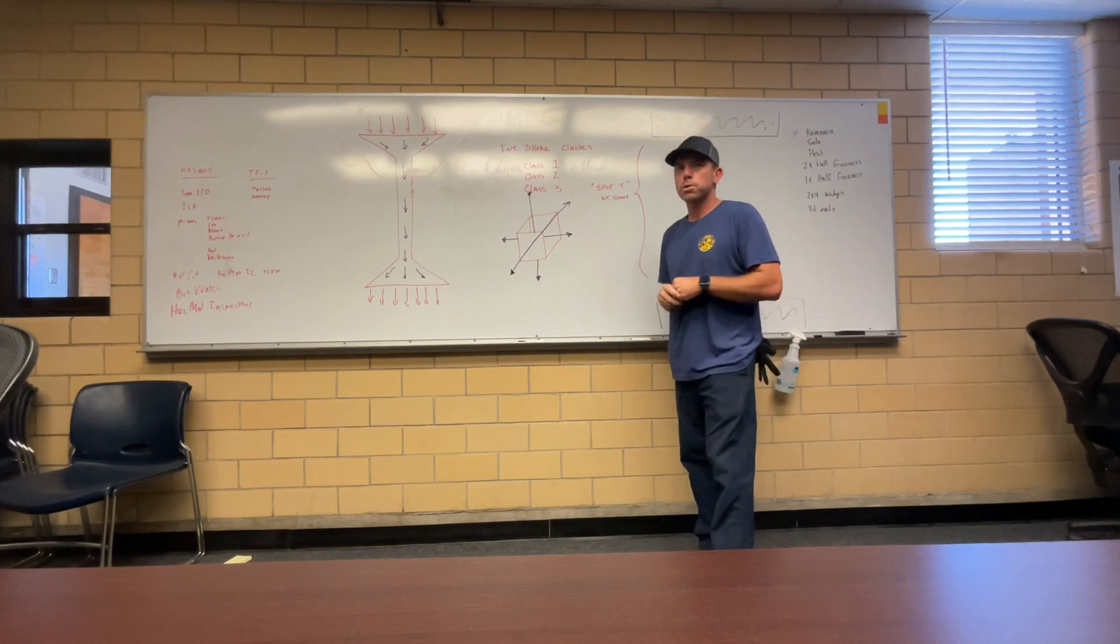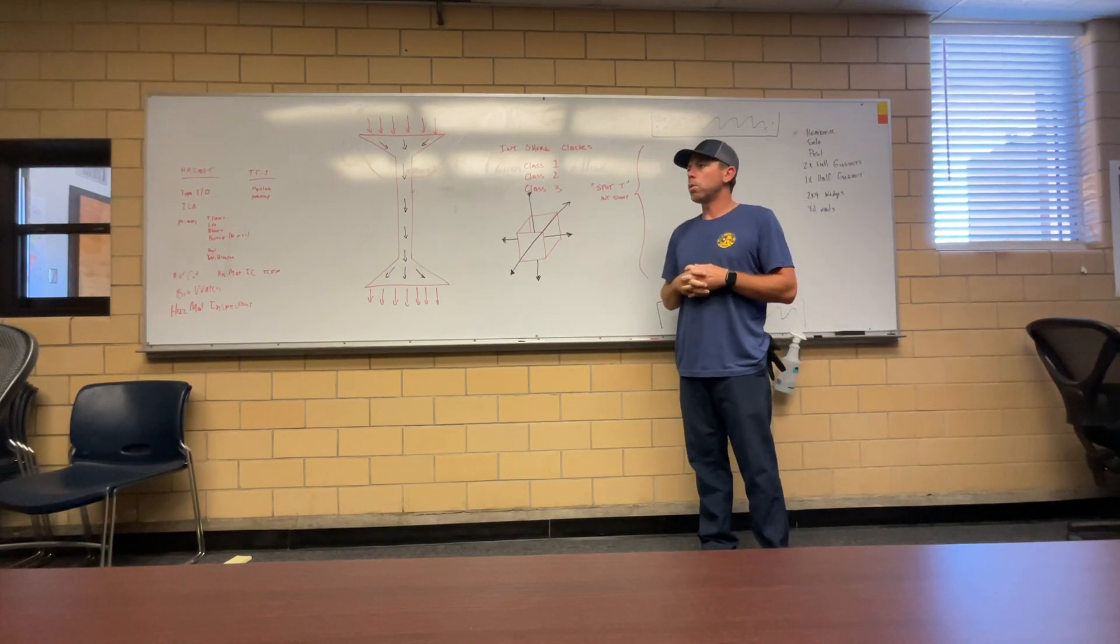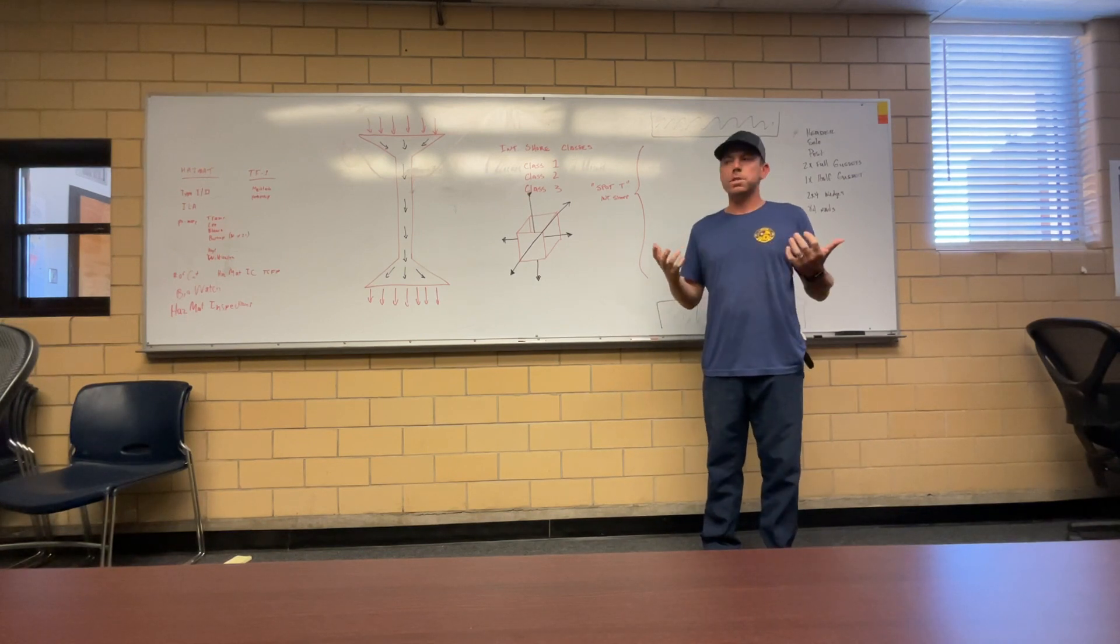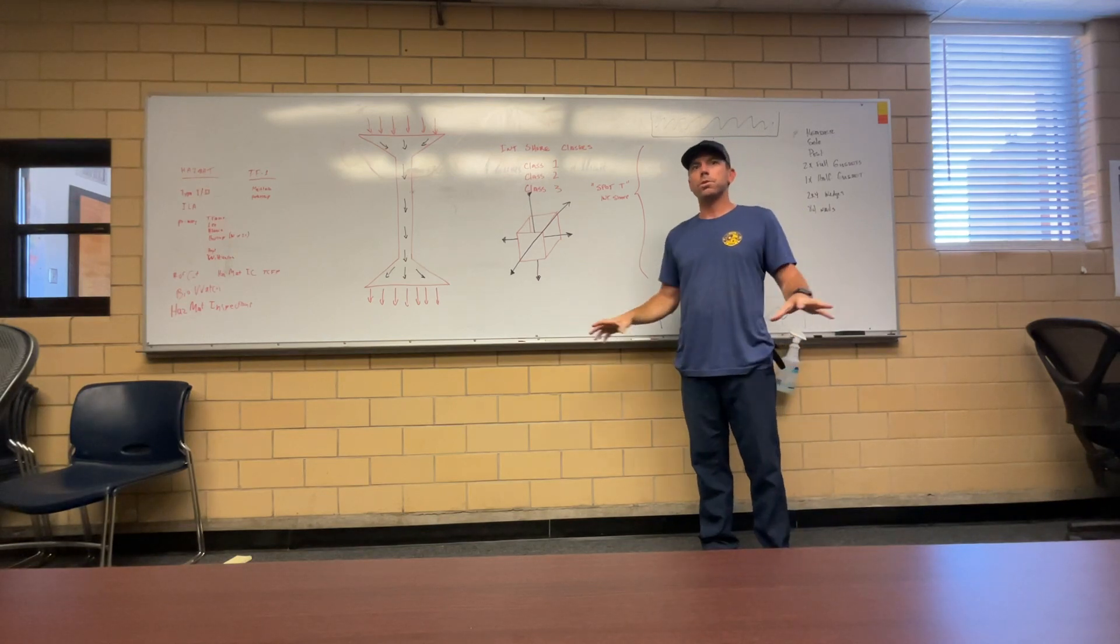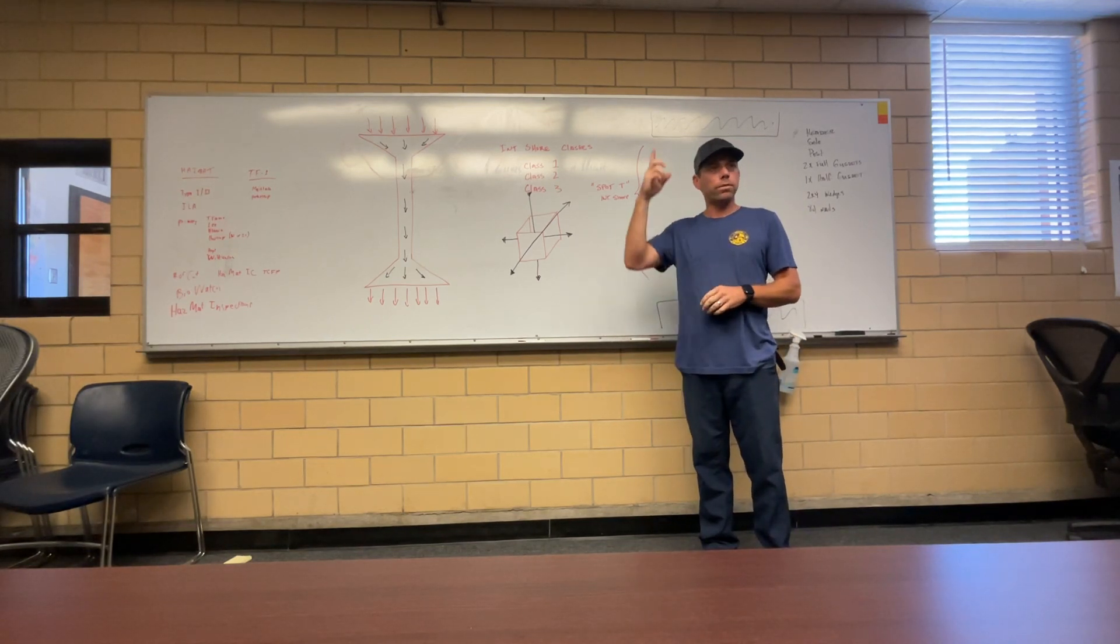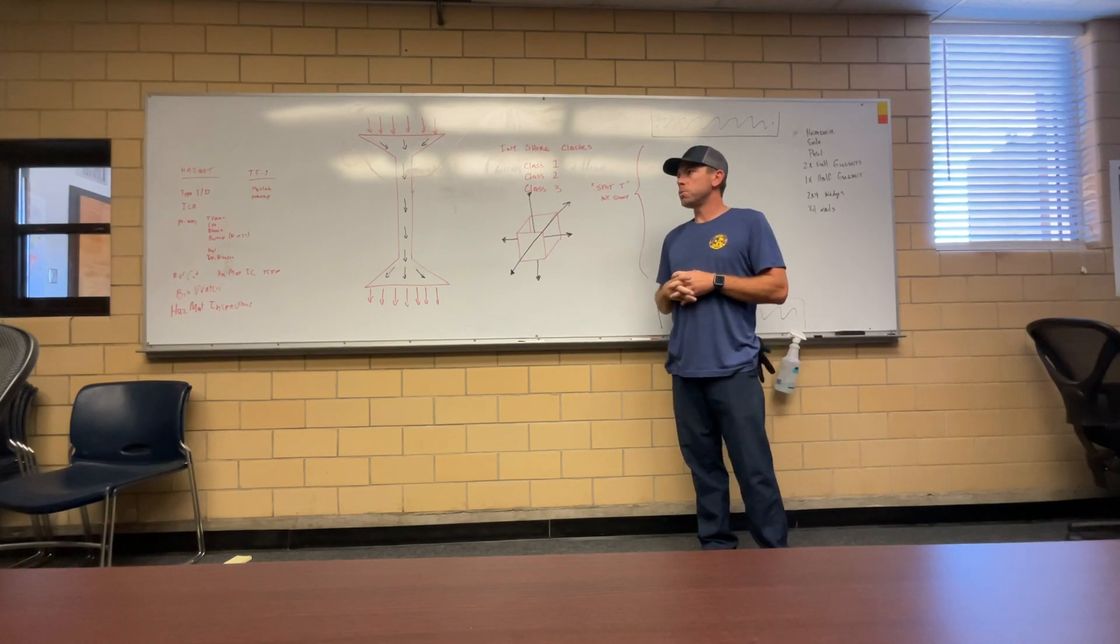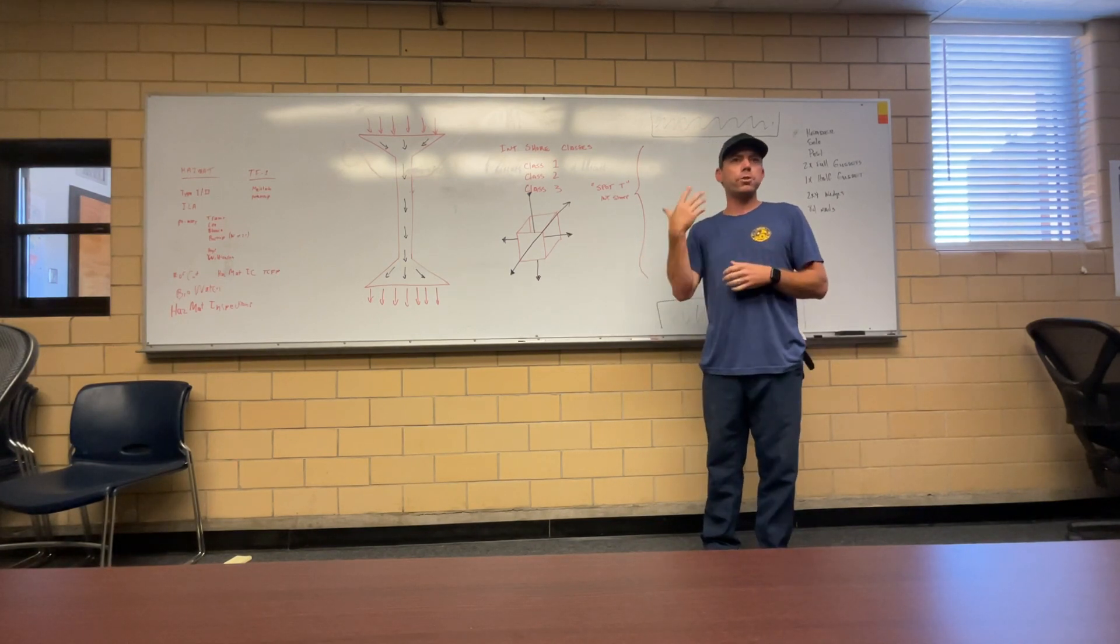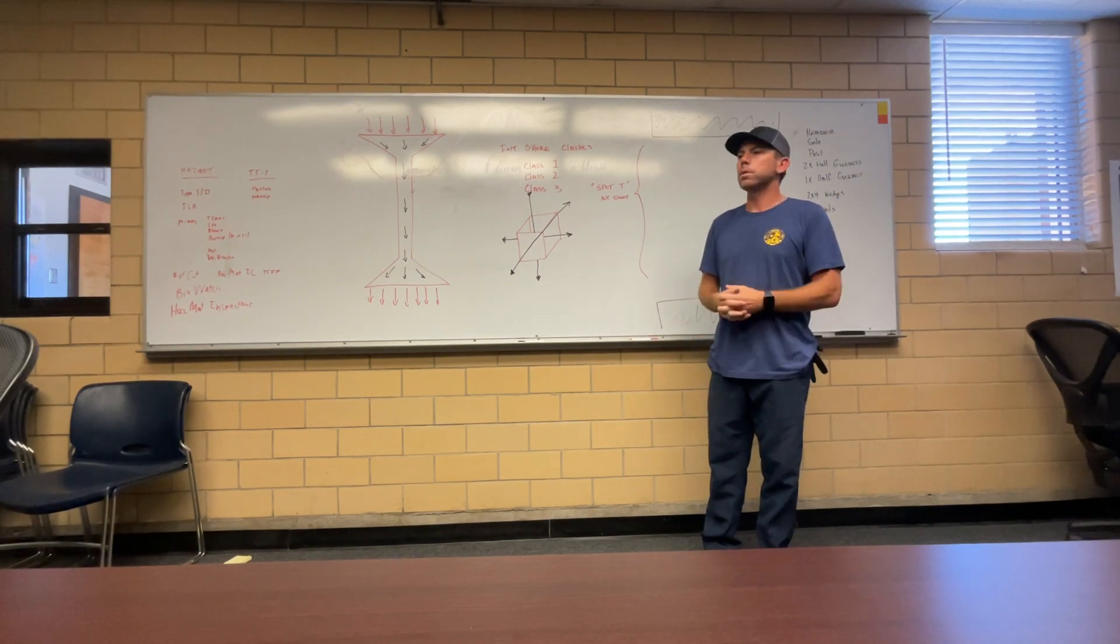So first off we're going to talk about class one, which our spot T shore falls into category of a class one shore. A class one shore does one thing and one thing only. It stabilizes and carries the load or the weight of the structure that's unstable from directly above, distributes it through the post, redistributes it through the ground and a soul. Only from straight above to straight down. If at any time that structure moves left, right, forward, or back, that shore will fall over, the building will come down. So that shore is only going to capture everything from above and redistribute it below.